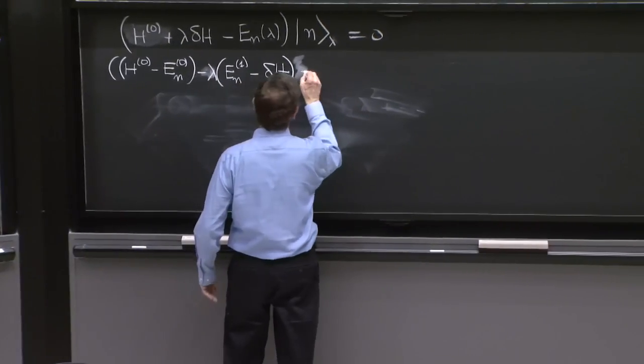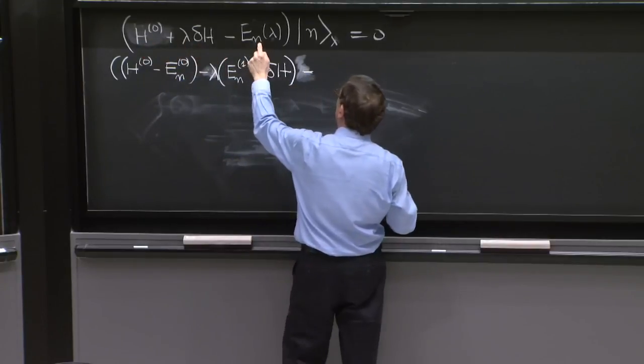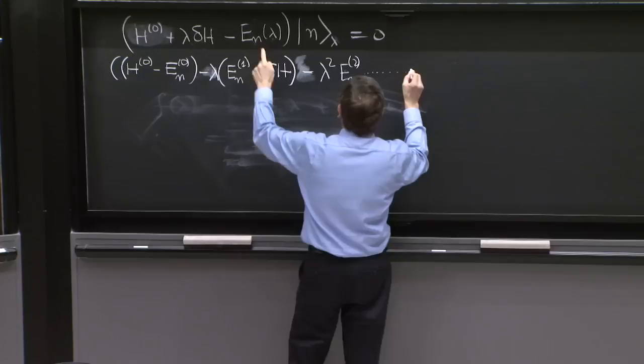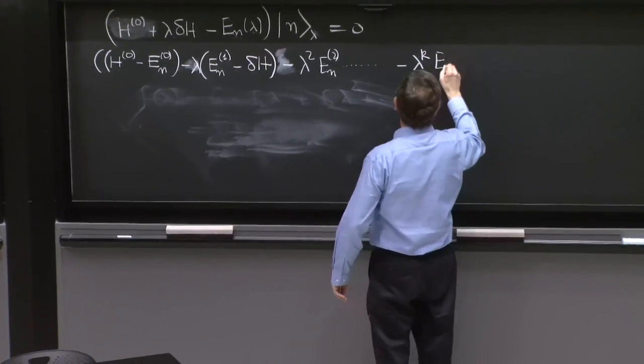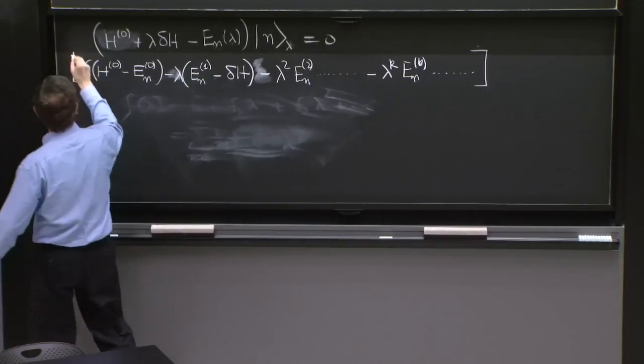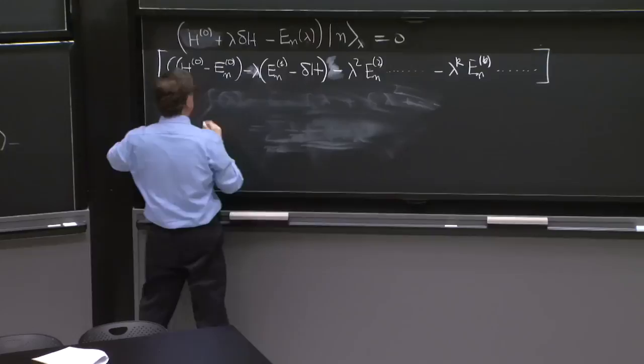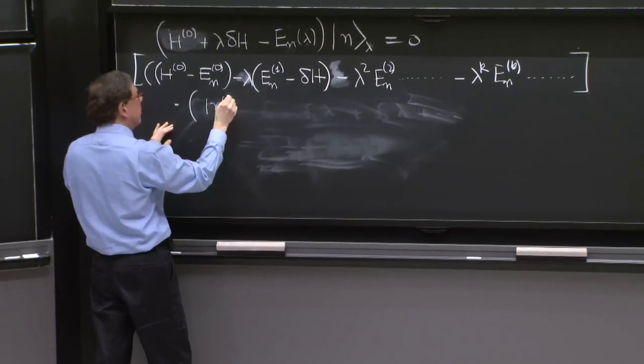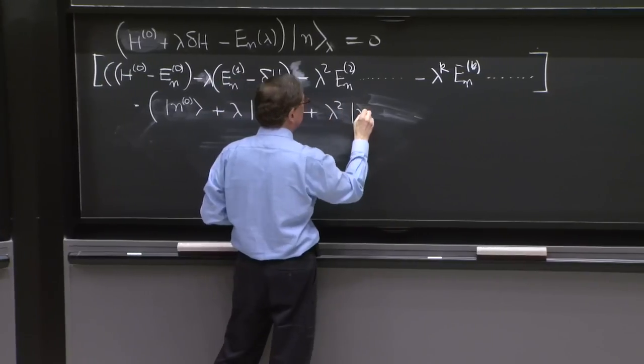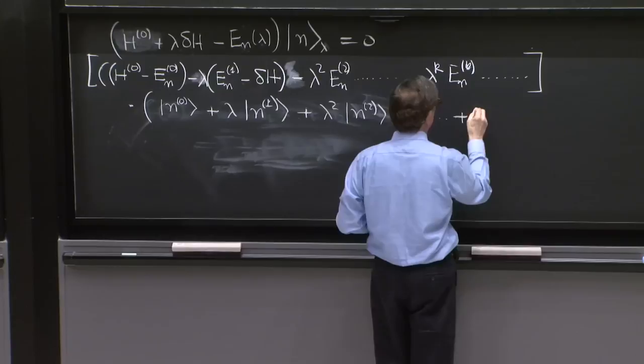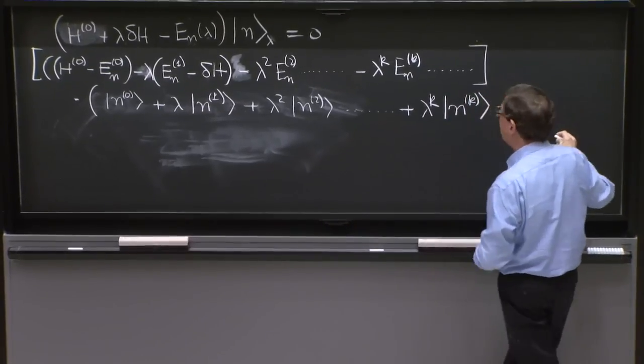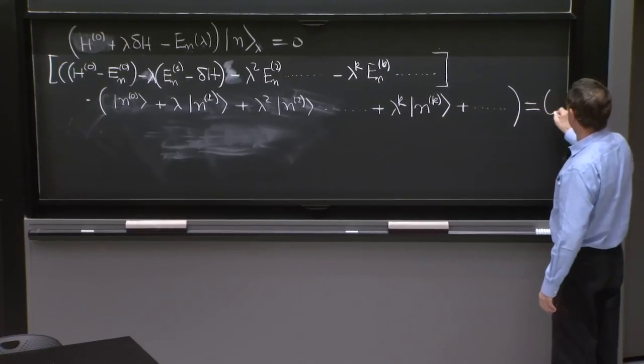Then it goes simple now. I've taken into account these two terms. All the rest come from here. So you have a minus lambda squared En2 and at some point a minus lambda to the k Enk. And then it goes on. And let me write it like a big bracket here. That's the parentheses. And now the state. You have n0 plus lambda n1 plus lambda squared En2 plus lambda to the k, the kth correction to the state. And it goes on forever. And all that is equal to 0.